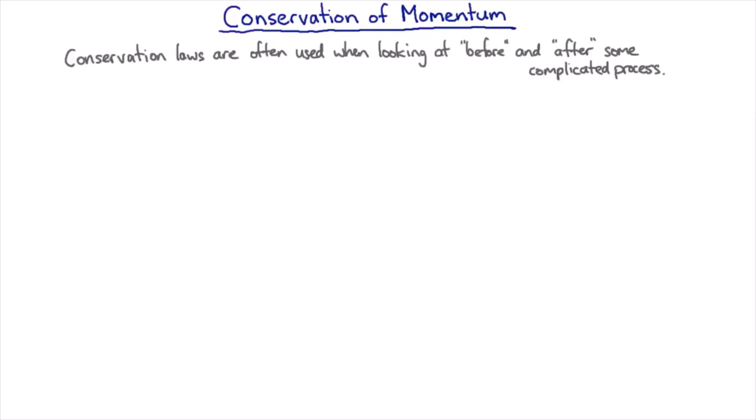Let's have a look at a situation where things are moving in more than one spatial dimension. Suppose I have one mass heading in one direction with some velocity.